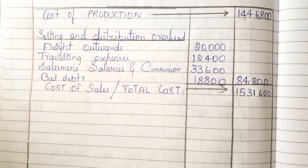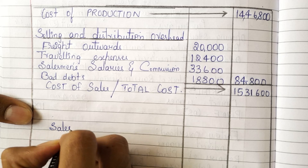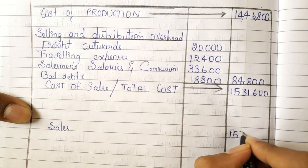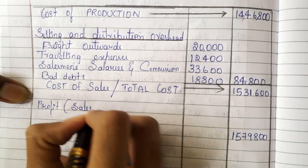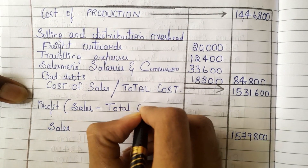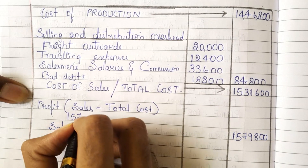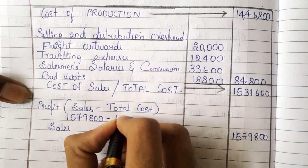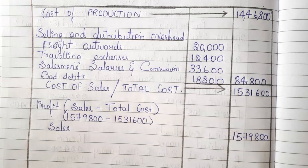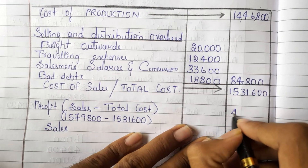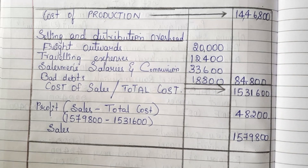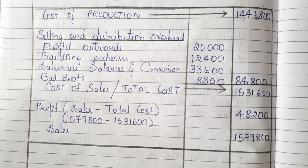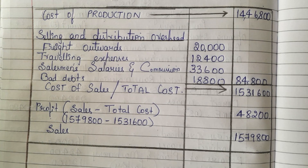In the question, we know the value of sales. Leave two lines and write sales at the end. Sales value is 15,79,800. Now we need to find out the profit. The formula is: sales minus total cost. 15,79,800 minus 15,31,600 gives us 48,200. This is the value of profit. Also, in the question you can see a cash discount. As I have told you in earlier videos, cash discount should not be considered in the preparation of a cost sheet, so we need to neglect it.